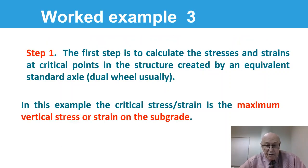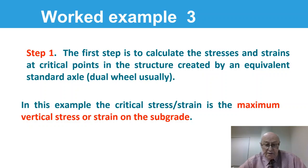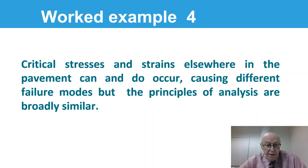The first step is to calculate the stresses and strains at critical points in the structure. These are the critical points created by an equivalent standard axle load — a standard axle load used in all calculations, which is the dual wheel assembly at the end of an axle. In this example, the critical stress and strain is the maximum vertical stress or strain on the subgrade, because we believe the subgrade failed due to excessive stresses or strains. Critical stresses and strains elsewhere in pavements can and do occur, causing different failure modes, but the principles of analysis are broadly the same.